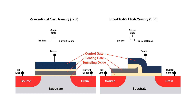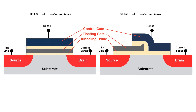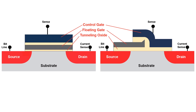Inside the IC we have a charge pump to create the high voltage we'll need to program and erase these memory bits. So let's say you supply a VDD of 1.8 volts to your part — inside we create about 10 volts from that. This 10 volts will give us a big enough energy field to create the kinetic energy we need to get some electrons hot enough to jump across this oxide.